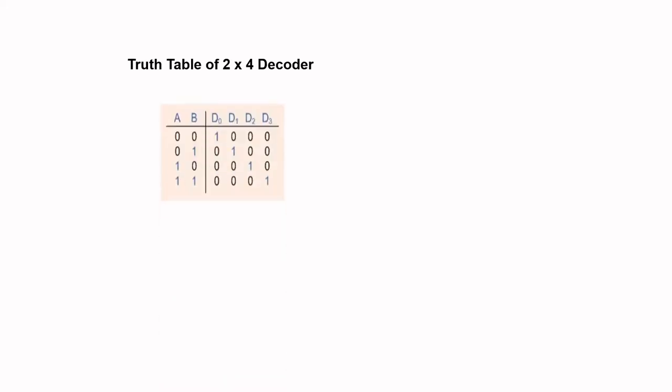The truth table of the decoder has AB inputs and D0, D1, D2, D3 as outputs. When AB are 0,0, D0 is 1 and the remaining outputs are 0. When AB are 0,1, D1 gets a value of 1 and D0, D2, D3 are 0. When A is 1 and B is 0, D2 is 1 and the remaining outputs are 0. When A equals 1 and B equals 1, D3 is 1 and D0, D1, D2 are 0.